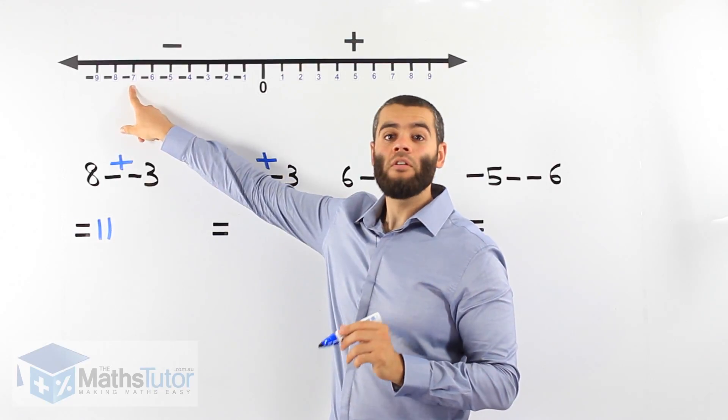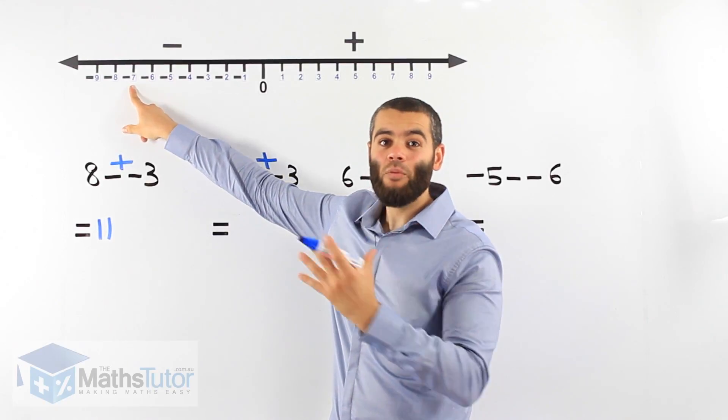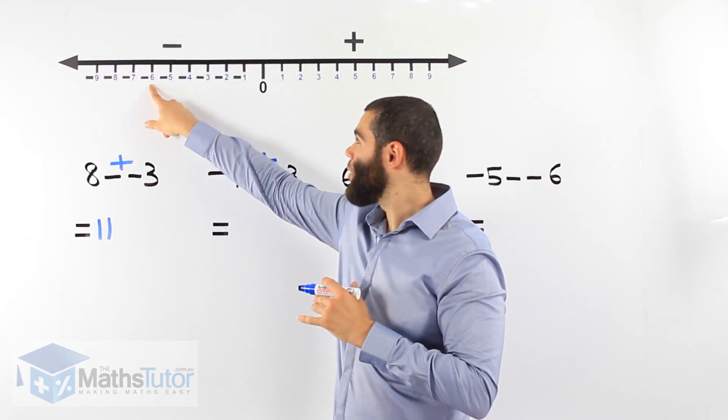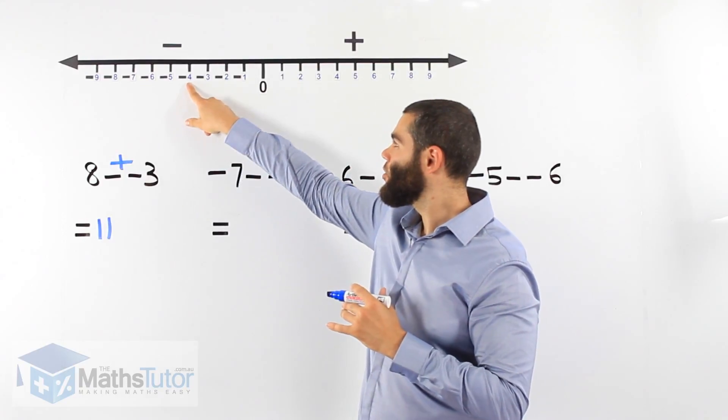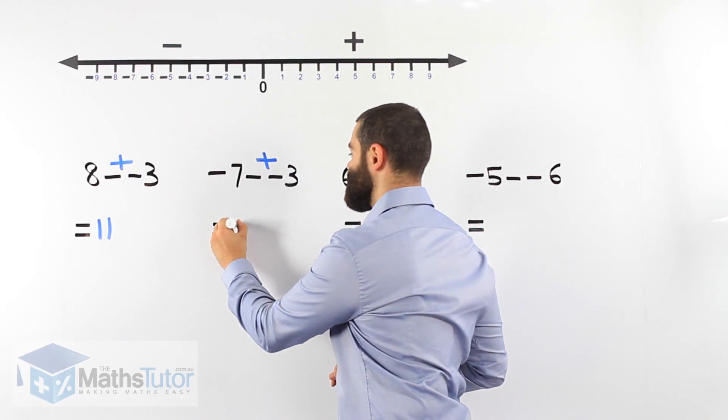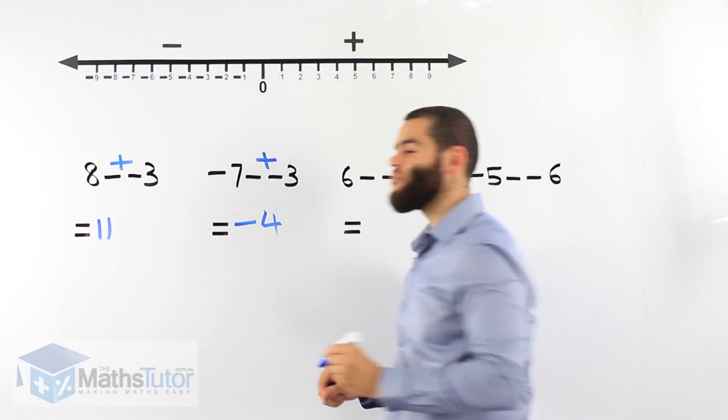We start at negative 7 and we plus 3. Plus meaning we go to the right. 1, 2, 3. Our answer is simply negative 4.